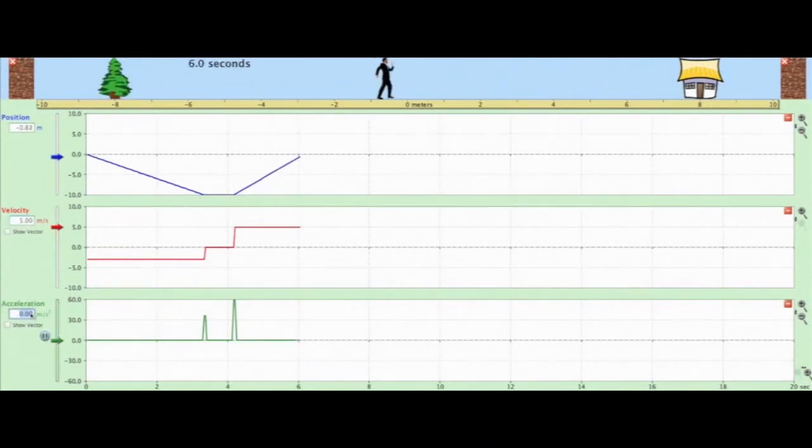In this section, the Motion Man is moving in the positive direction. Therefore, the gradient of the position time graph is positive. Now, if we actually found this gradient, we get a value of positive 5. That can be seen here on the velocity time graph. Note that the position time graph has the same steepness or slope the whole way through. Therefore, the velocity is the same the whole way through. And during this section, because we're not speeding up or slowing down, the acceleration is zero. This can be seen because the gradient of the velocity time graph is flat, therefore zero, making acceleration zero.